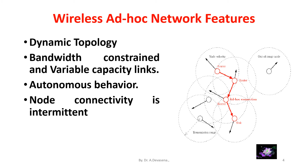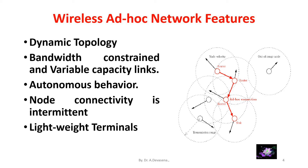The fourth feature is node connectivity is intermittent, meaning it is not steady or it is irregular. The fifth feature is that the terminals in the network are lightweight terminals. In most cases, the nodes in an ad hoc network are mobile with less CPU capability, low power storage, and small memory size.